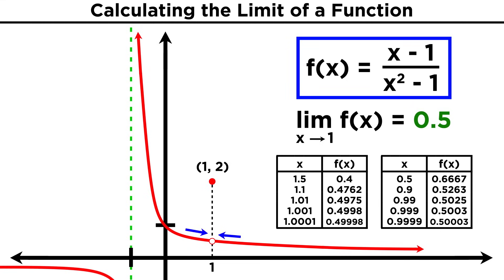Even if we change this function so that at precisely x equals one, we give the function some other value, like two, that won't change the limit, because the limit doesn't look at what the function is doing at that point, only what it is doing while approaching that point, and the behavior of the function everywhere else has remained the same.